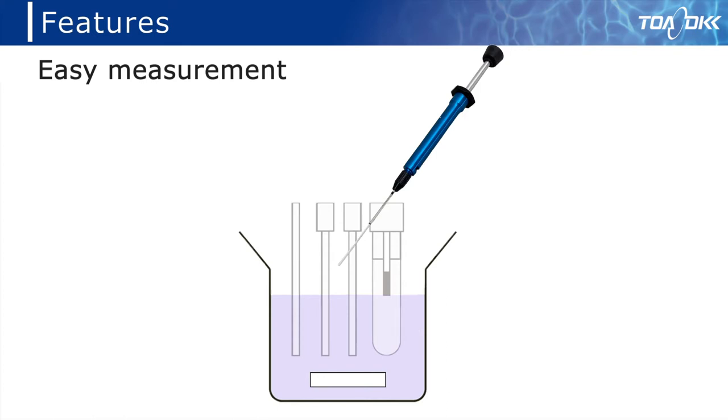To measure, simply inject the sample into a dedicated beaker containing the electrolyte. Once you get used to the dispenser, measurement is easy.